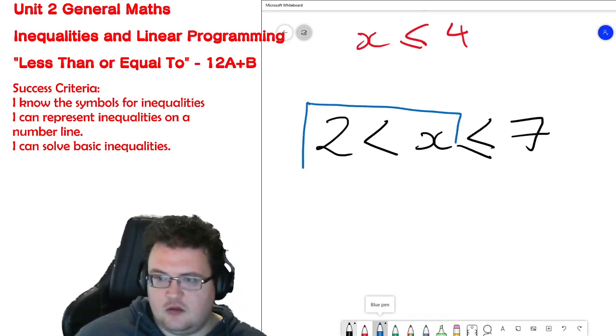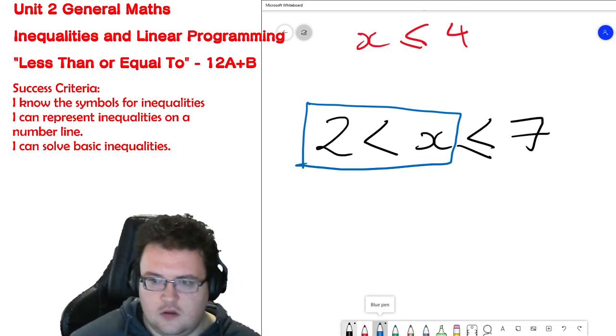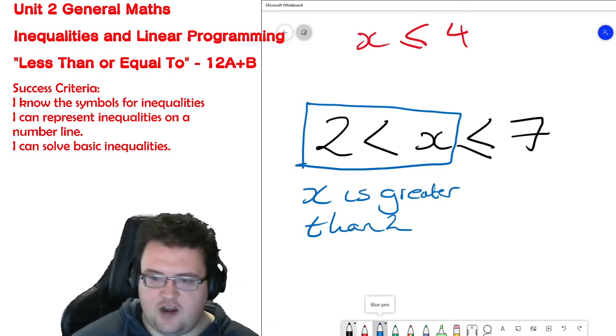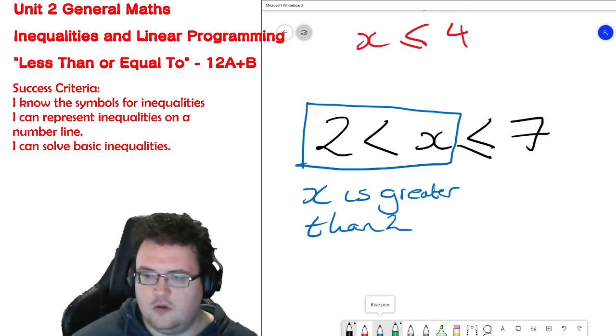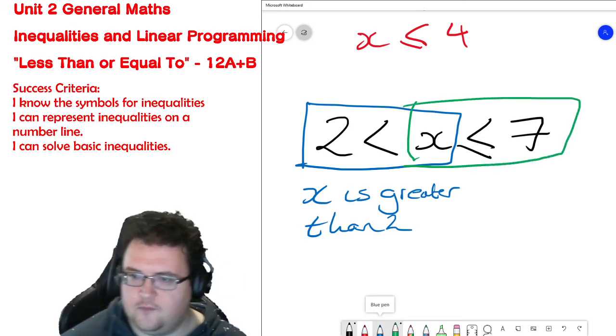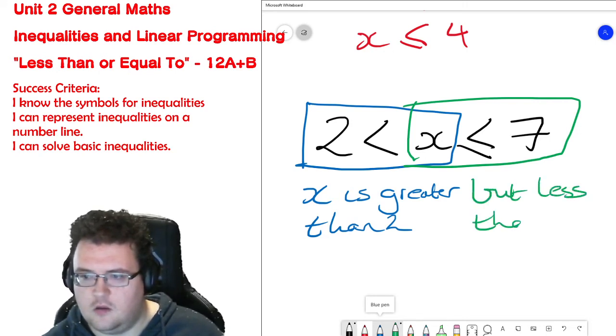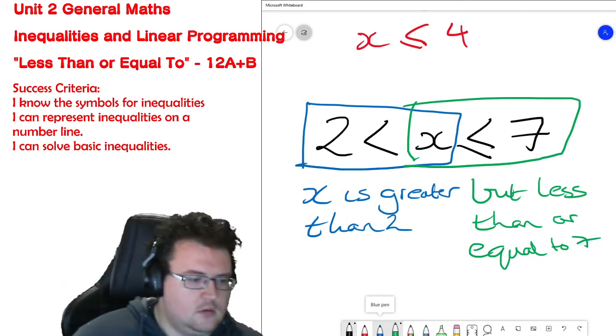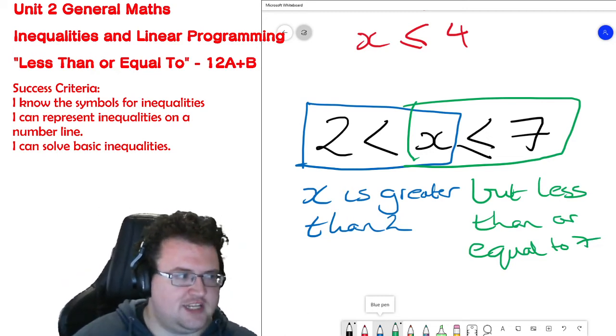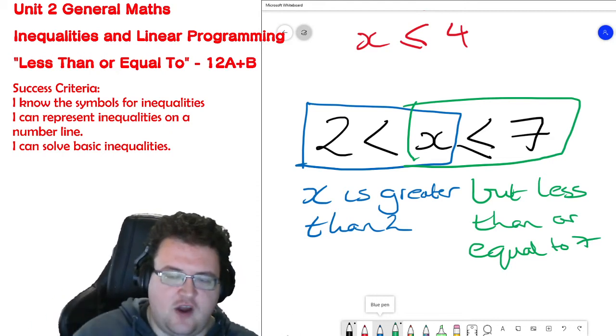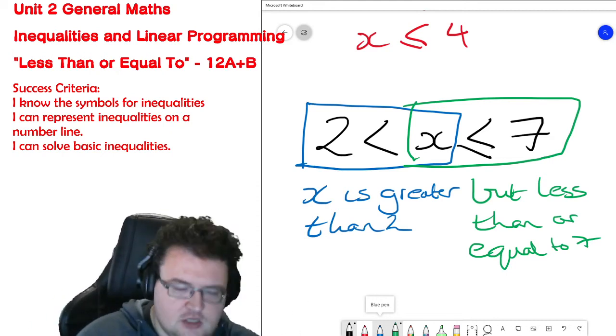So first things first, let's look at this one here. X is greater than 2, but less than or equal to 7. There are two inequalities in there that both have to be included. So x is greater than 2, but it's less than or equal to 7.